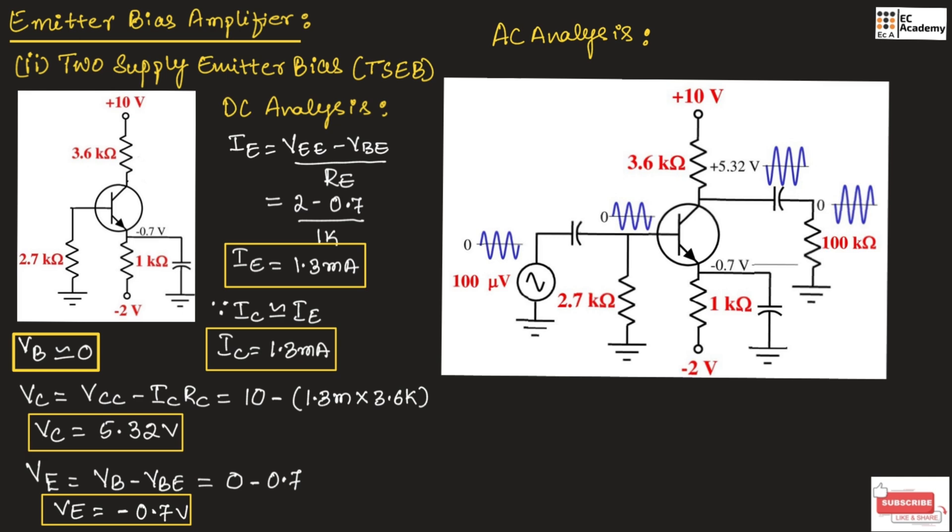This is about DC and AC analysis of two supply emitter bias configuration. I hope you have understood the topic. Thank you.